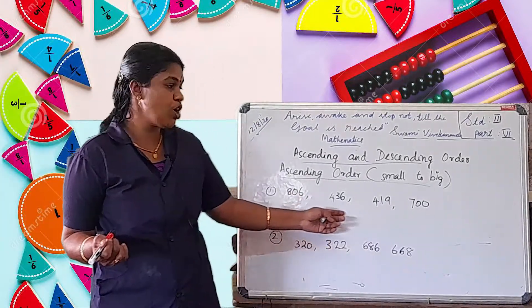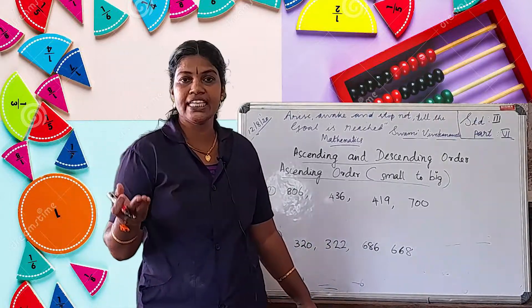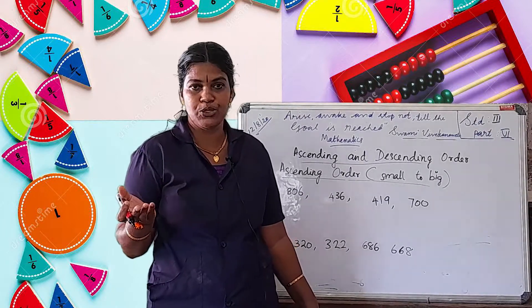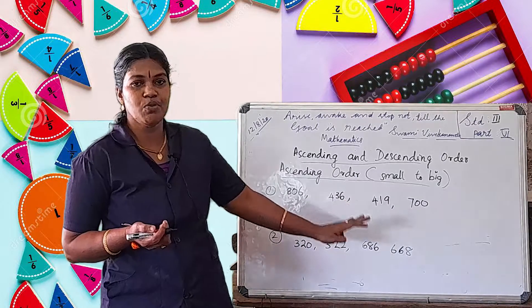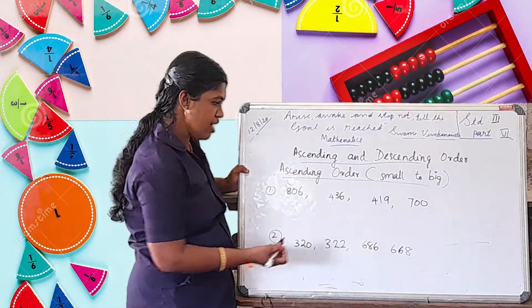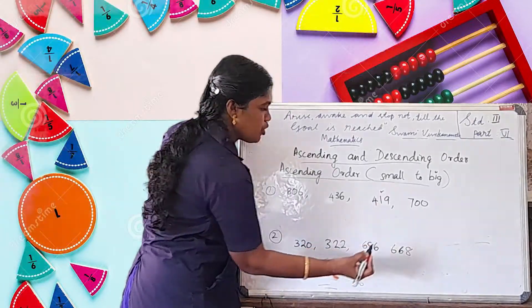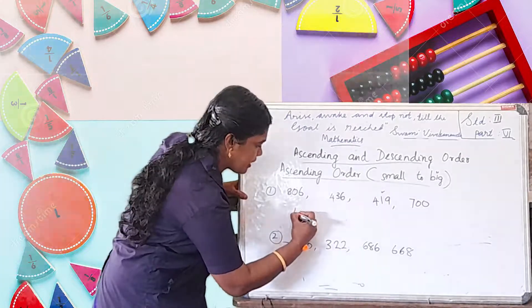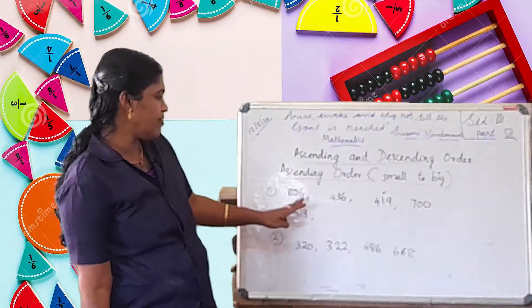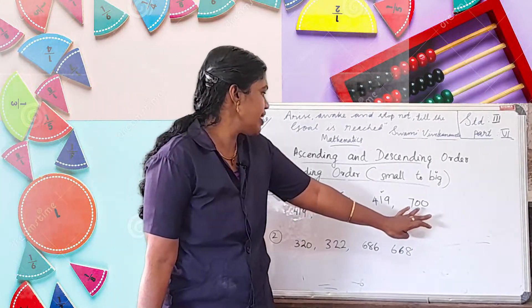What is the smallest number? We will compare the numbers. Yes, 419 — that is the smallest number. Then we have 806, 436, and 700.